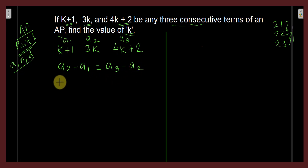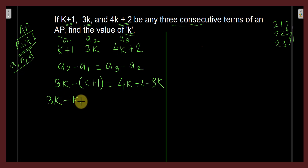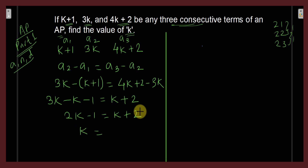So we get that a2 minus a1 equals a3 minus a2. That is: 3k minus (k+1) equals (4k+2) minus 3k. Simplifying the left side: 3k minus k gives 2k, minus 1. The right side: 4k minus 3k gives k, plus 2. Taking k to the other side: 2k minus k equals k, and taking 1 to the other side: k equals 2 plus 1, which equals 3.